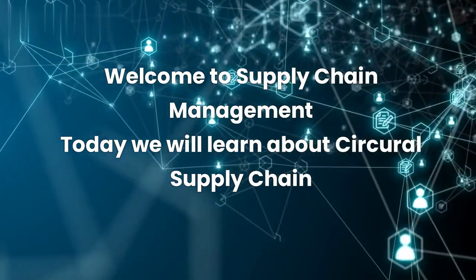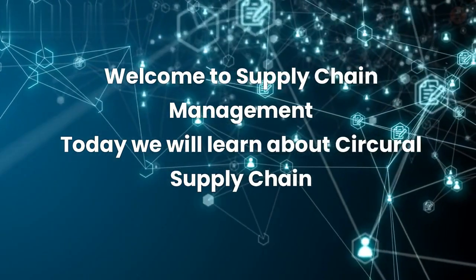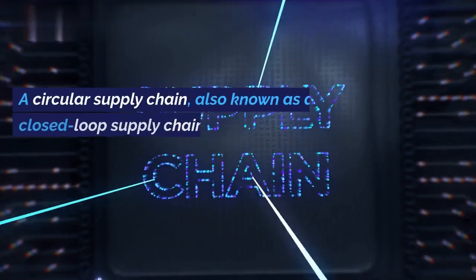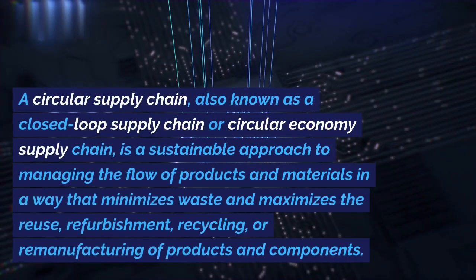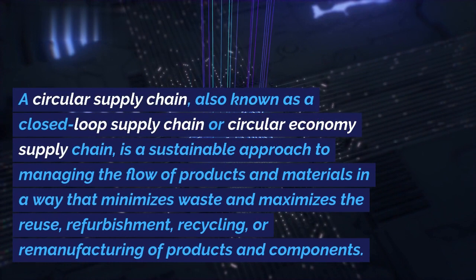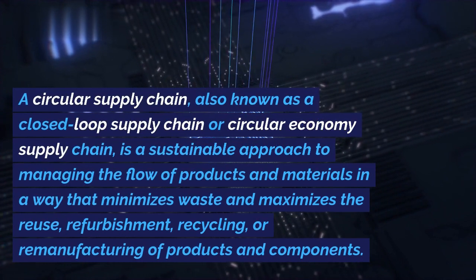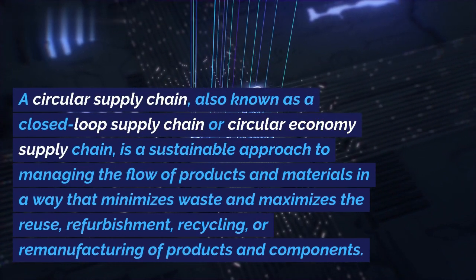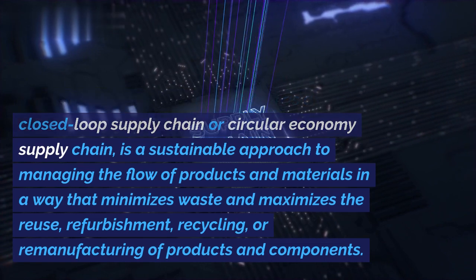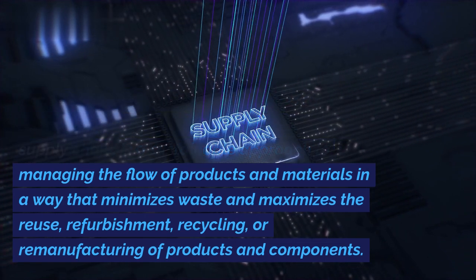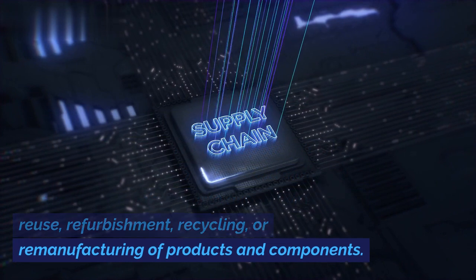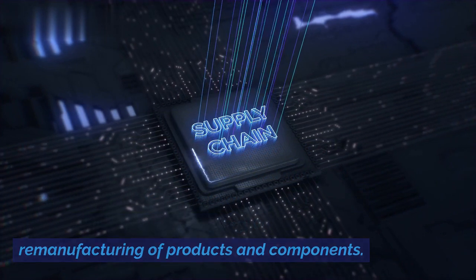Welcome to Supply Chain Management. Today we will learn about circular supply chain. A circular supply chain, also known as a closed-loop supply chain or circular economy supply chain, is a sustainable approach to managing the flow of products and materials in a way that minimizes waste and maximizes the reuse, refurbishment, recycling, or remanufacturing of products and components.